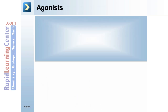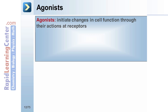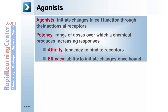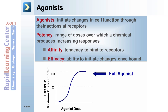Agonists initiate changes in cell function through their actions at receptors, producing effects of various types. Agonists have a specified potency, which is the range of doses over which a chemical produces increasing responses. An agonist's potency depends upon their affinity — the tendency to bind to receptors — and efficacy, the ability to initiate changes once bound. A full agonist produces maximal effect and has high efficacy. In contrast, a partial agonist produces a lower response at full receptor occupancy than full agonists, and as a result has intermediate efficacy.